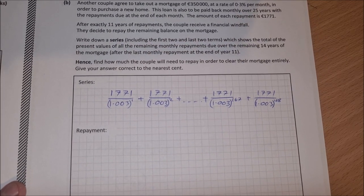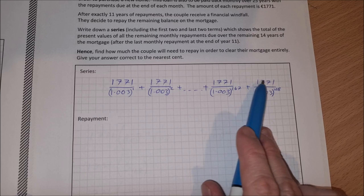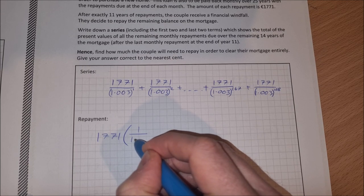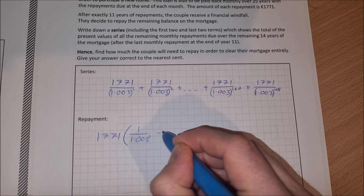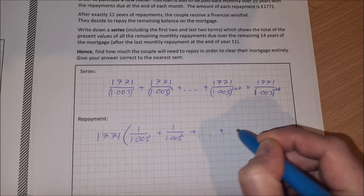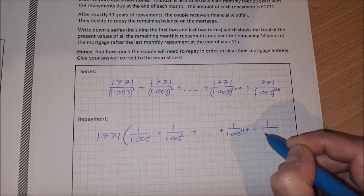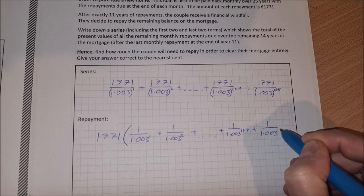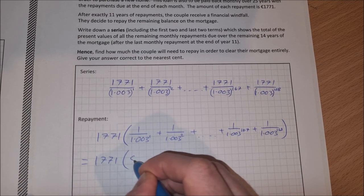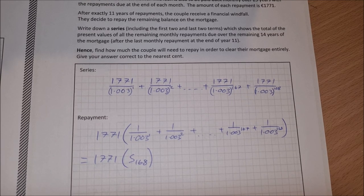Now to find the repayment amount, we're going to basically find the sum of this series, so the S of 168. Now before I do that, I'm going to factor out this 1771 and just write down my simplified series, which will just be 1 over 1.003 plus 1 over 1.003 squared plus dot dot dot plus 1 over 1.003 to the power of 167 plus 1 over 1.003 to the power of 168.